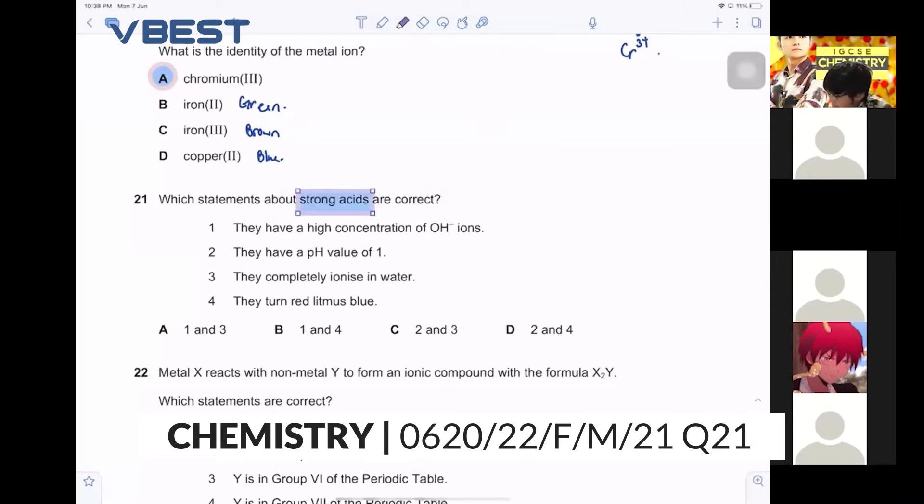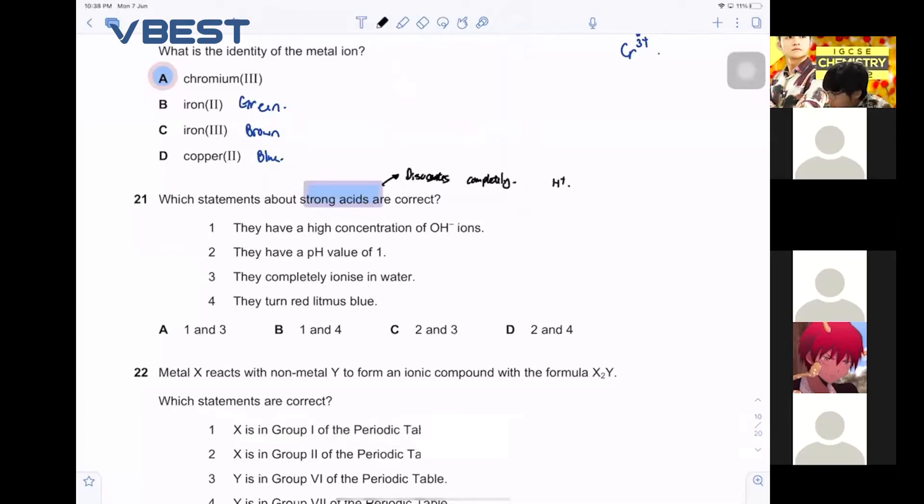Okay, so strong acid, remember, they must dissociate completely. Okay, so they dissociate completely to form, to give hydrogen plus ion, right? So let's look at this part. Okay, they have high concentration of H+, you think I'm done? Okay, so yes, this is correct. Completely ionized is correct.